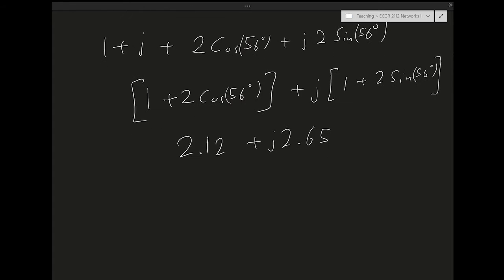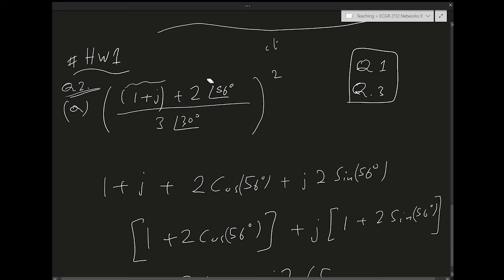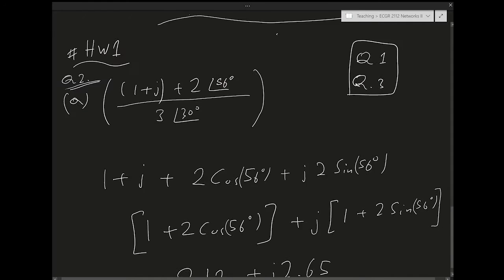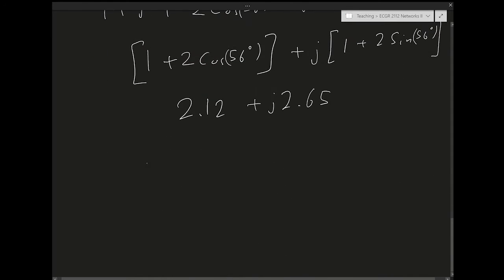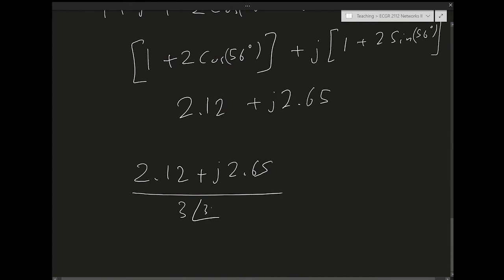To continue the calculation, I need to take this sum and divide it by 3∠30°. So I need to take 2.12 + j2.65 and divide it by 3∠30°. Whenever doing multiplication or division, it's always easier to work in polar form; whenever doing addition, it's always easier to work in rectangular form.